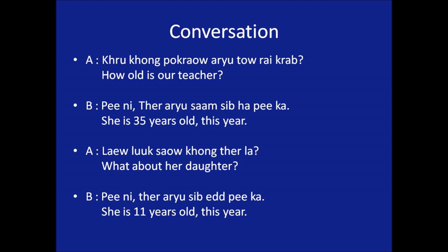From your previous conversation with the classmate, you remember that the teacher had a daughter. You ask: แล้วลูกสาวของเธอล่ะ? — 'What about her daughter?' Your classmate replied: ปีนี้เธออายุ 11 ปีค่ะ — 'She is 11 years old this year.' Let's review: คุณแม่ของพวกเราอายุเท่าไหร่ครับ? ปีนี้เธออายุ 35 ปีค่ะ. แล้วลูกสาวของเธอล่ะ? ปีนี้เธออายุ 11 ปีค่ะ.